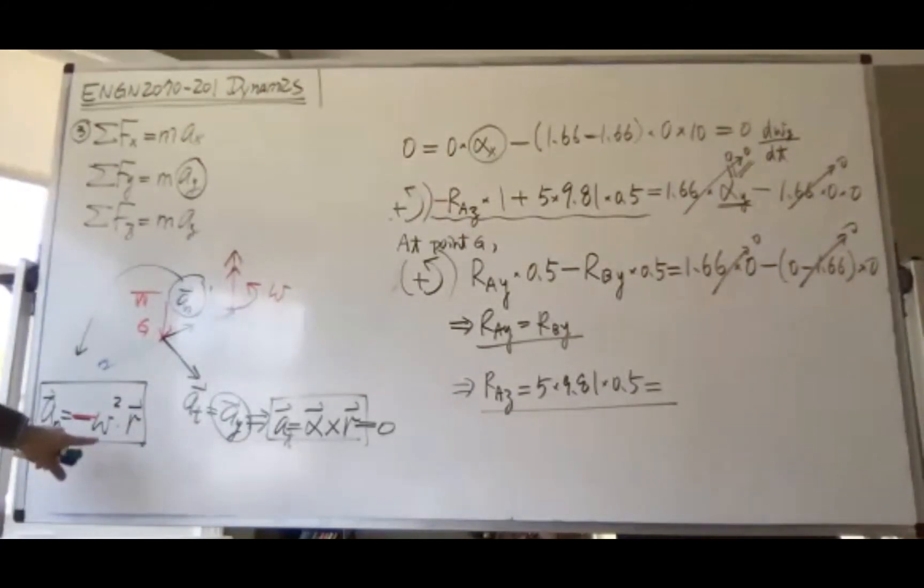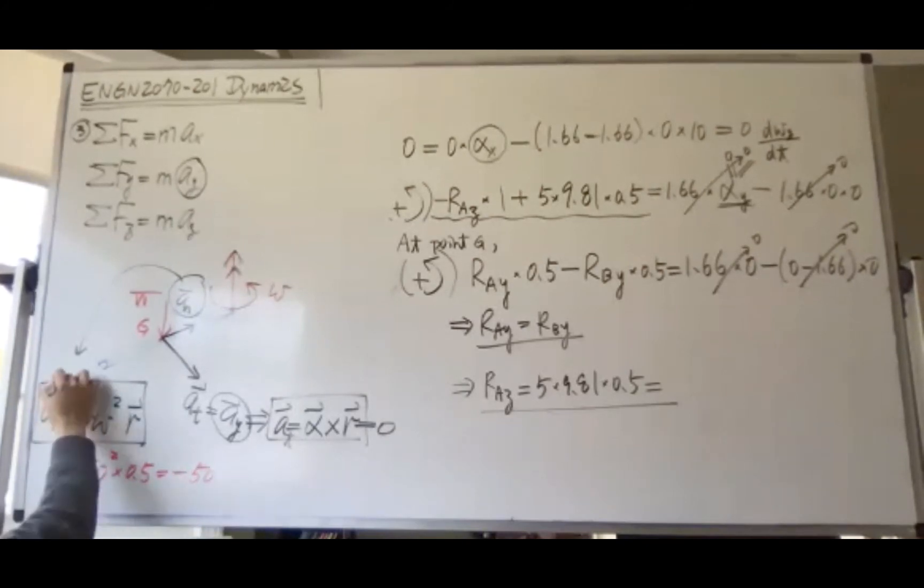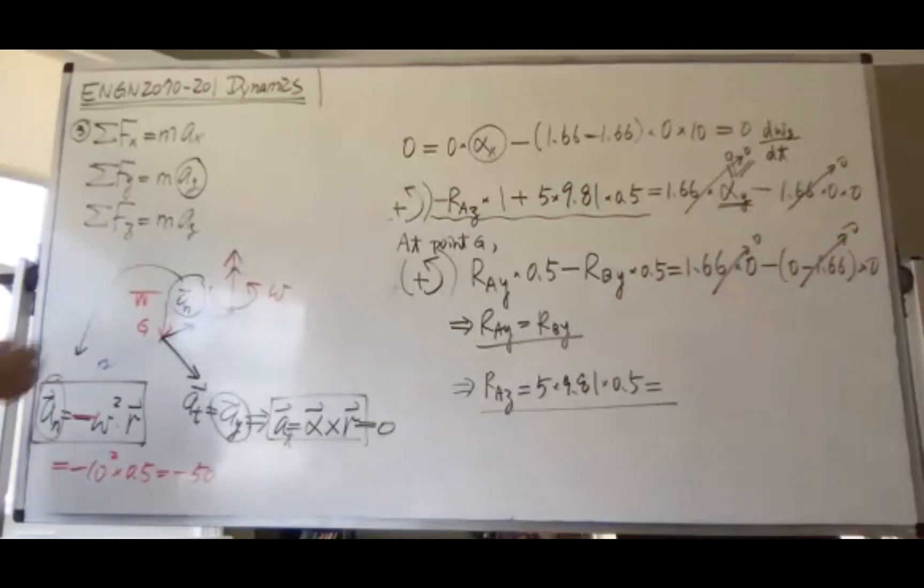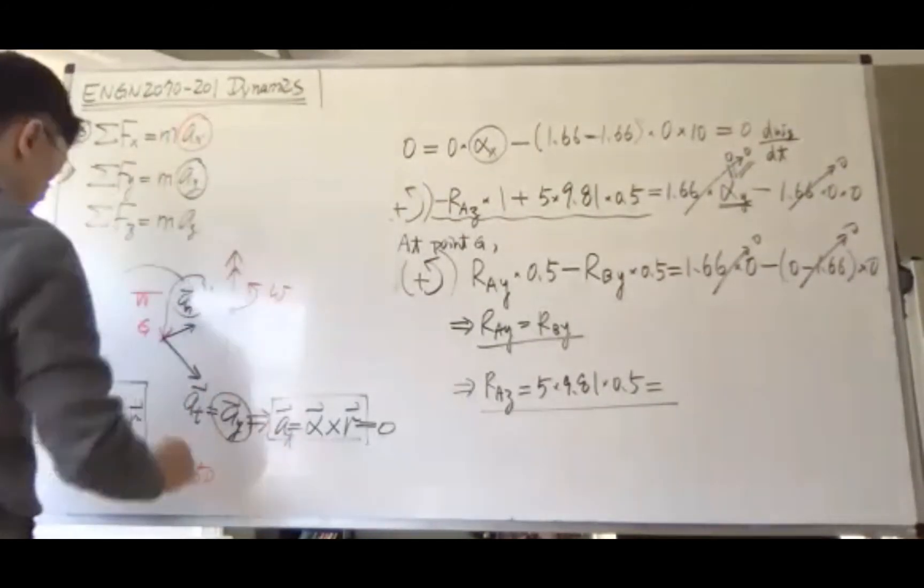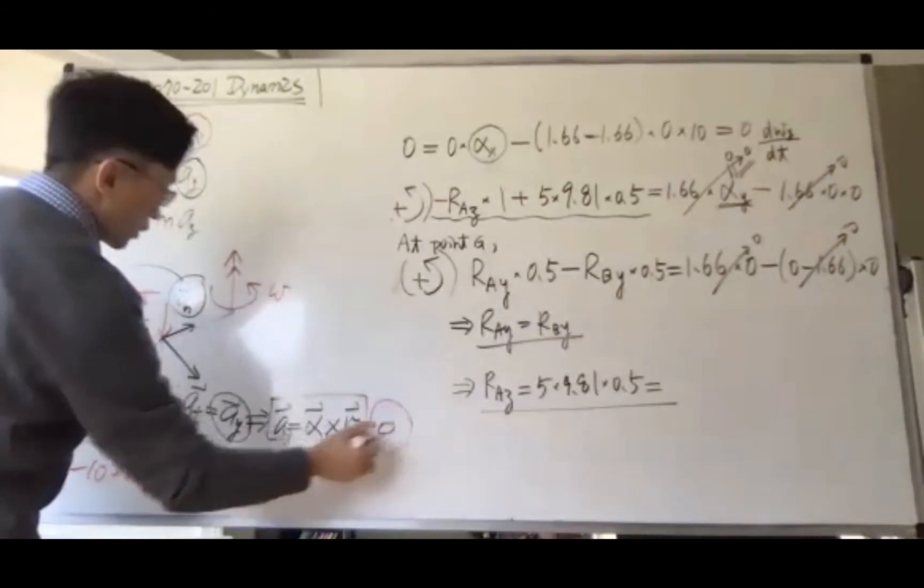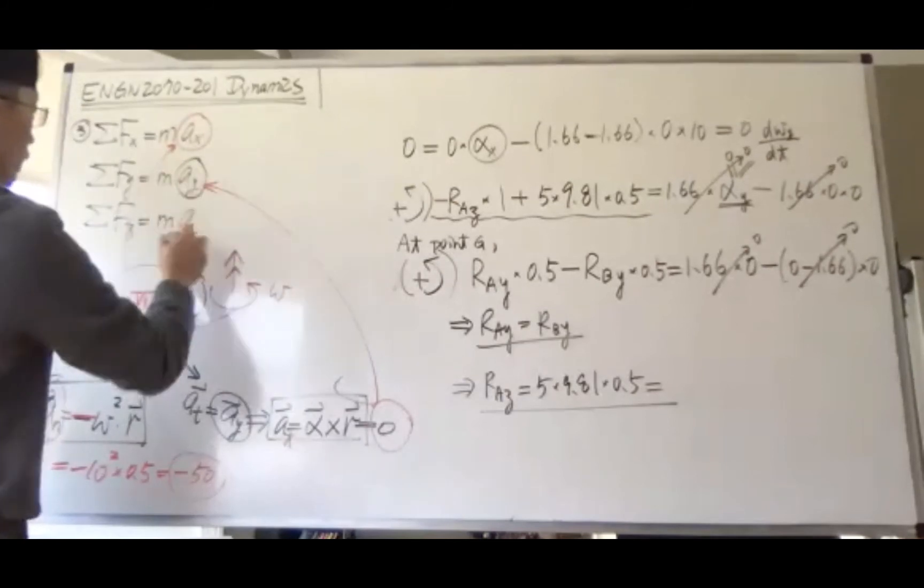We have omega equals 10, so this becomes negative 10 squared times 0.5—that's negative 50. That's the normal component, which is a_x. This zero goes back to a_y, and there's no a_z.